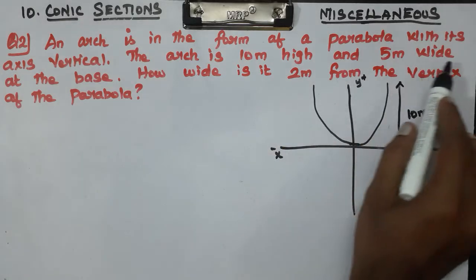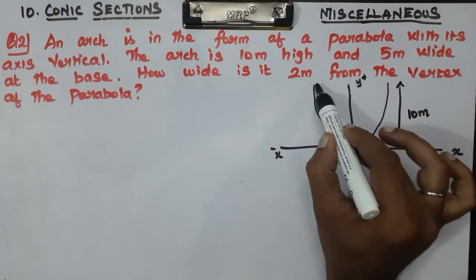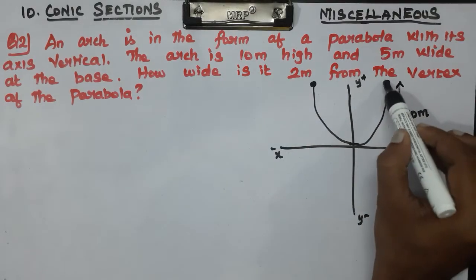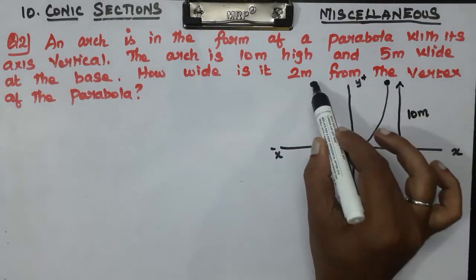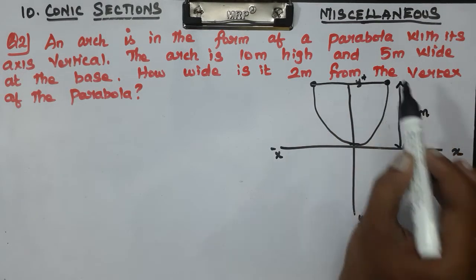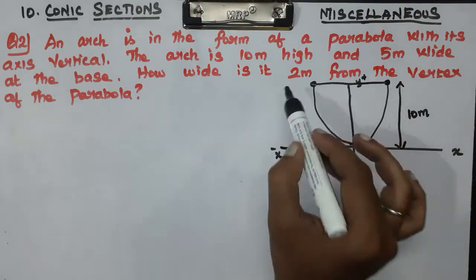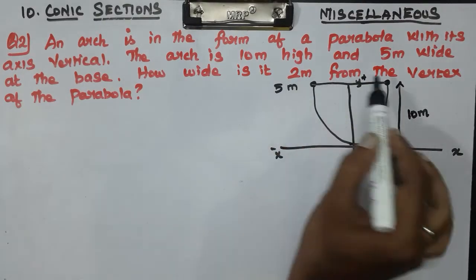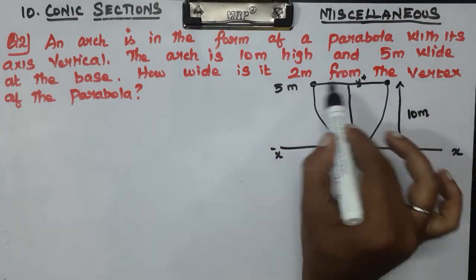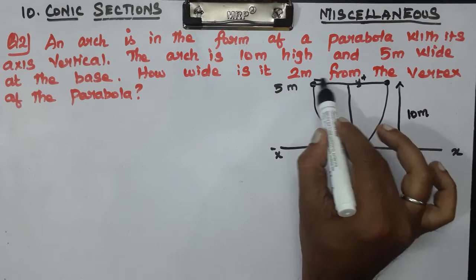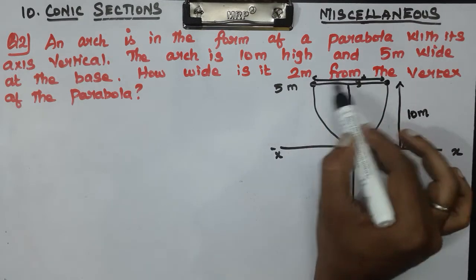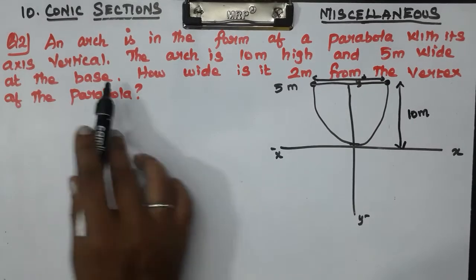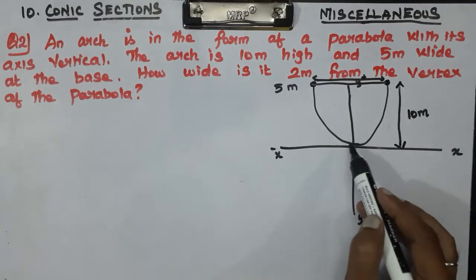The arc is 5 meters wide. In the main portion, the total width is 5 meters — that's the main point. At the base, this is the base. It is 5 meters wide.